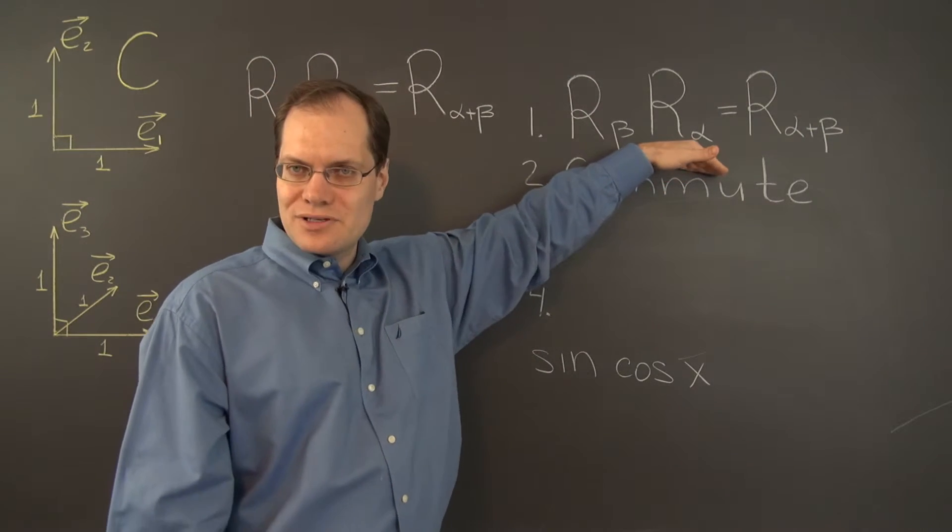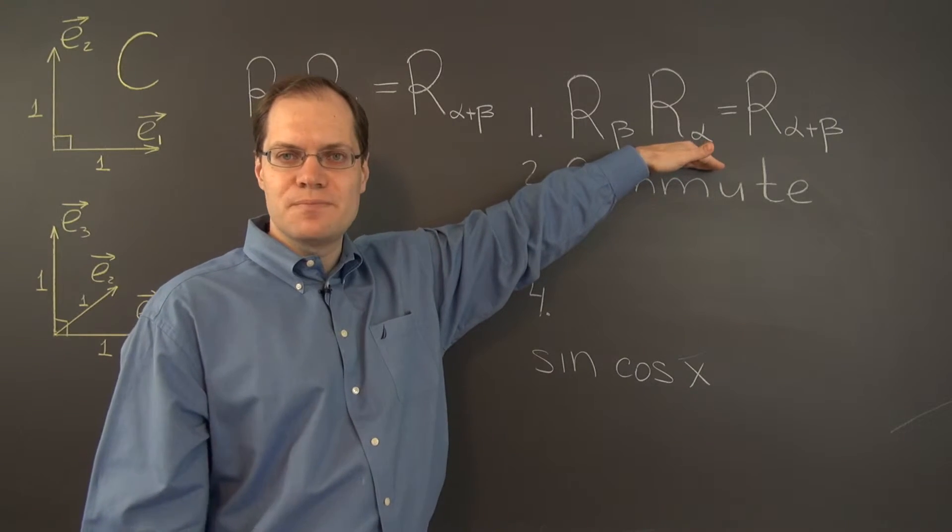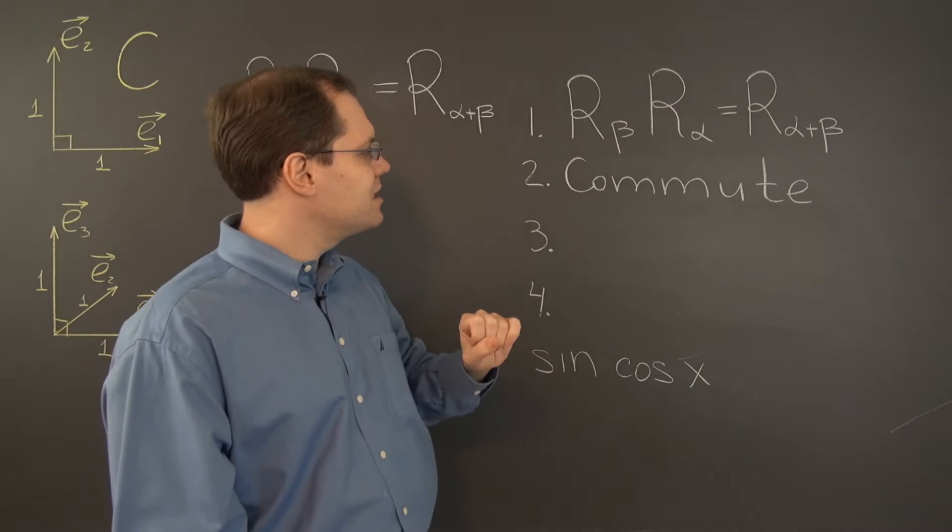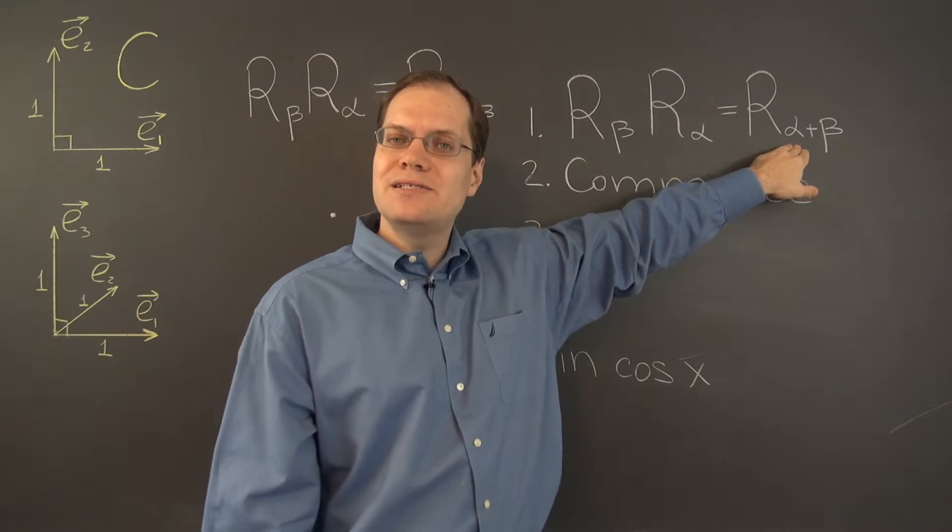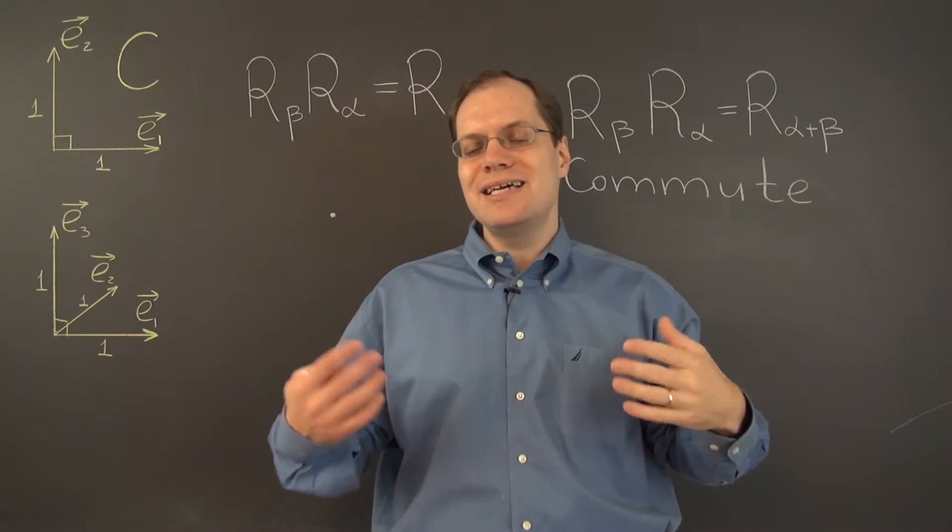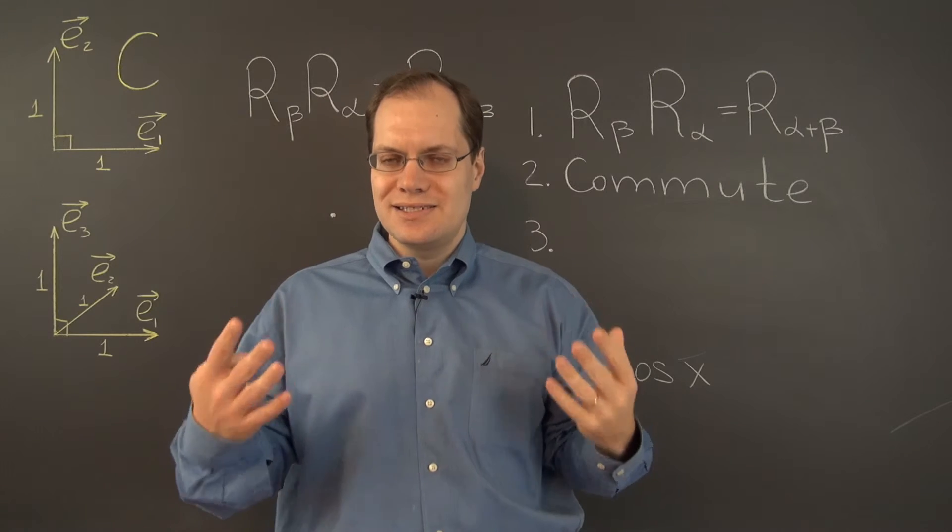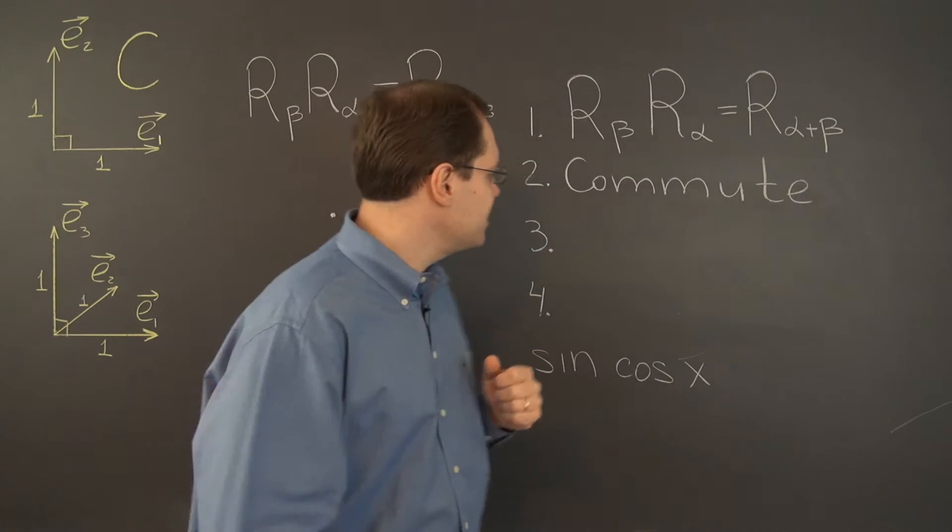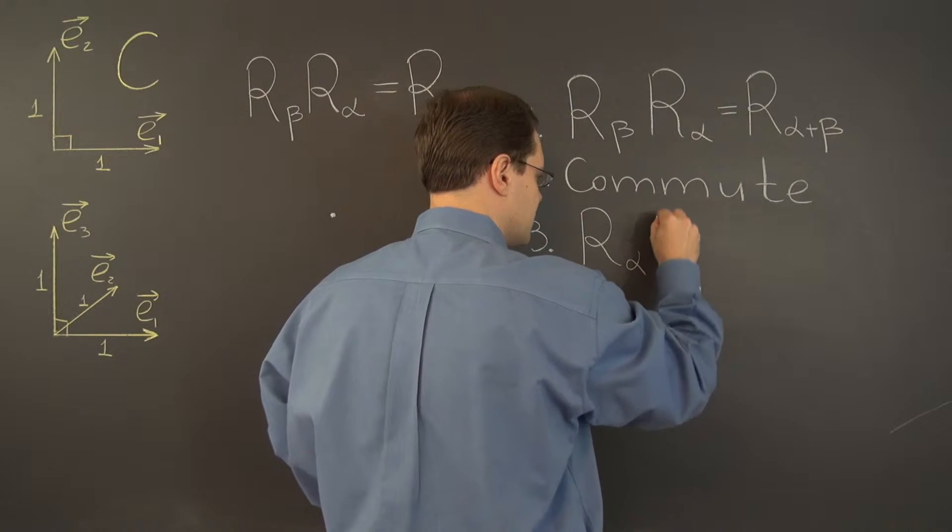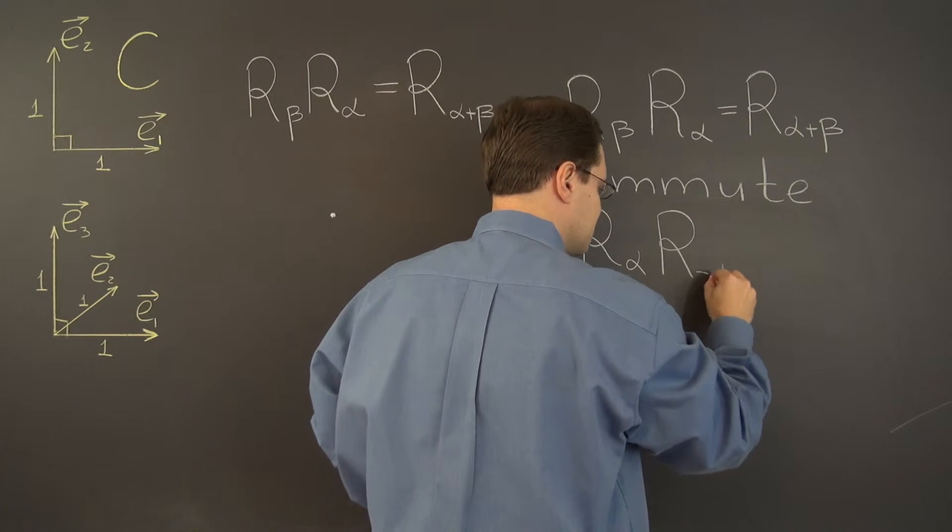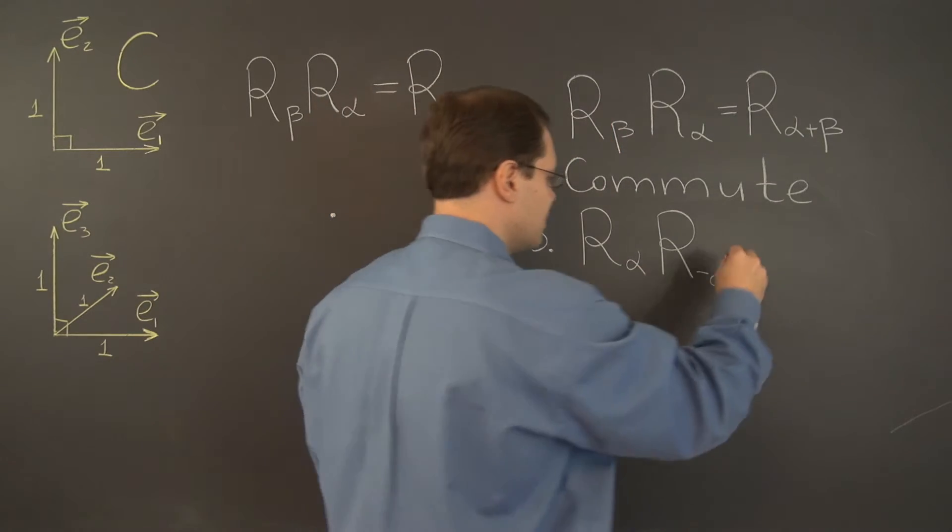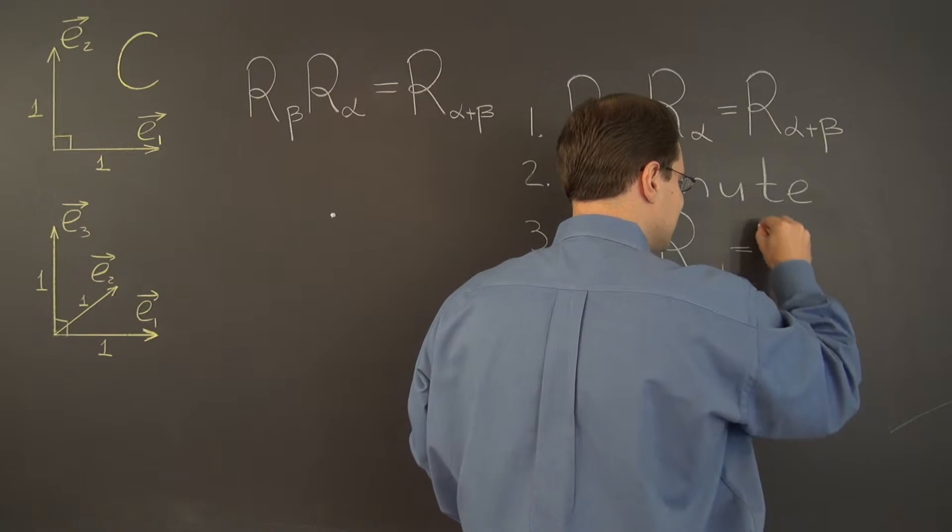Well, here's another important consequence of this relationship. What if beta was negative alpha? Then the result would be rotation by the zero angle. And rotation by the zero angle is the identity transformation. It's the transformation that does nothing at all. So let's write it down this way. R, I'm now going to use alpha, combined with rotation by negative alpha. And because of this property, the order doesn't matter. So I wrote it in this order. Equals the identity matrix.